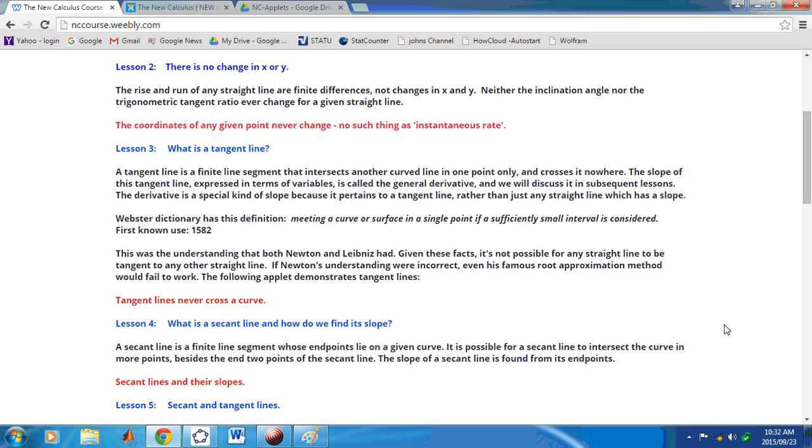This was the understanding that both Newton and Leibniz had. Given these facts, it's not possible for any straight line to be tangent to any other straight line. And here comes a blockbuster revelation. If Newton's understanding were incorrect, even his famous root approximation method would fail to work.